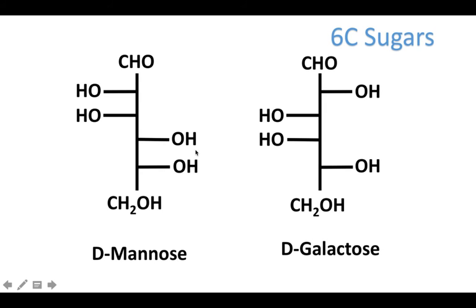Mannose and galactose — I don't pair these up too much. The way I remember mannose is that carbon 2 and carbon 3 are going to be on the same side, and carbon 4 and carbon 5 are going to be on the same side. The way I remember that is mannose is the only simple sugar we're learning that starts with M, and M has two little humps right next to each other. So my two groups that are right next to each other are going to be on the same side — left-left, right-right with mannose.